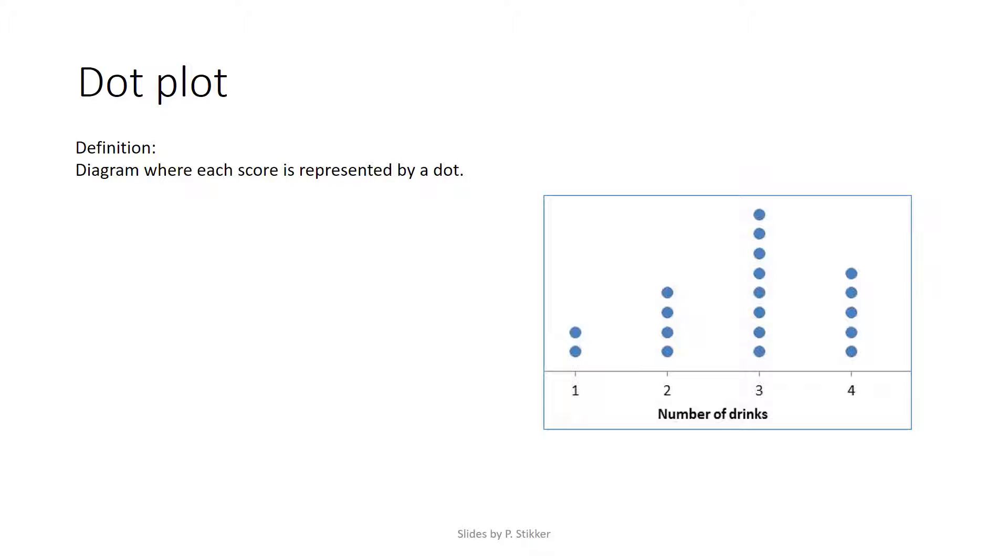A dot plot can be defined as a diagram where each score is represented by a dot. On the right over here, an example. Each dot represents one person.